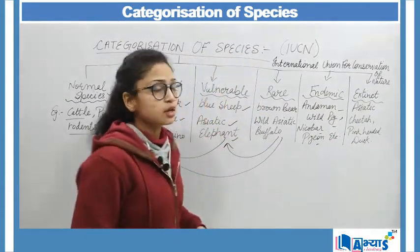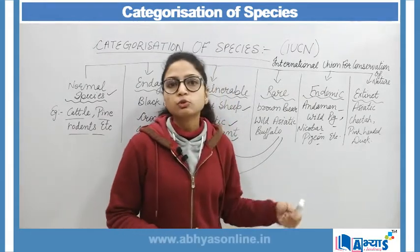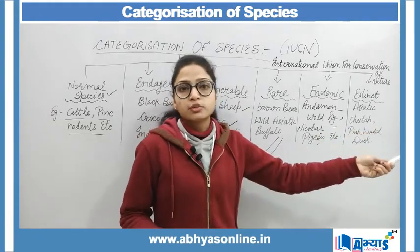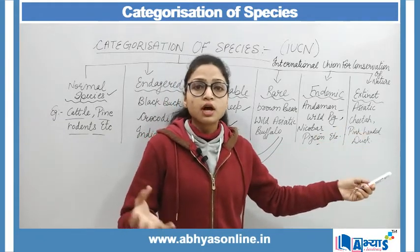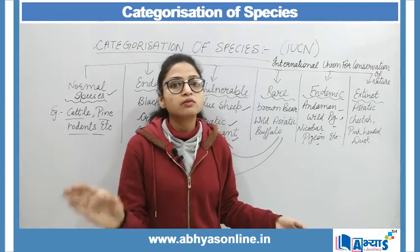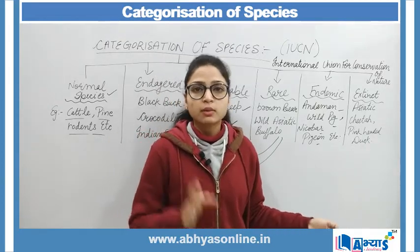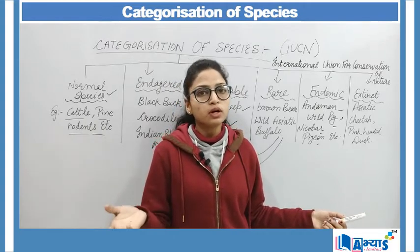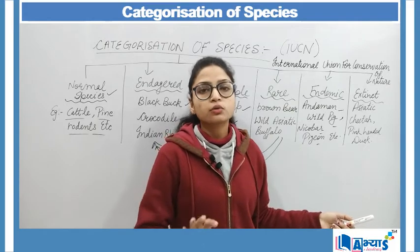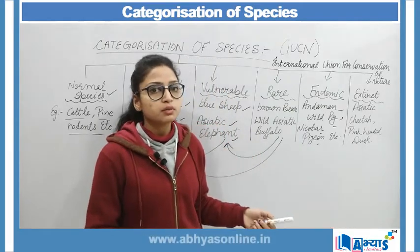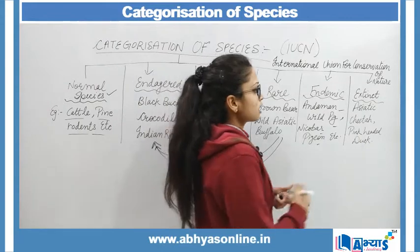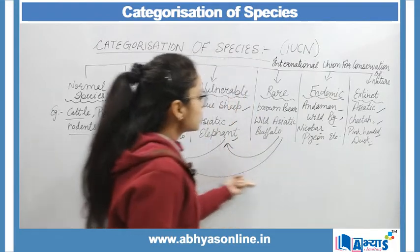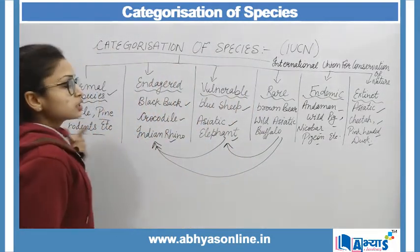Extinct का मतलब होता है लुप्त हो जाना या बिल्कुल खत्म हो जाना। जब इस category के animals का survey किया गया, जहाँ पर यह पाए जाते थे वहाँ जाकर survey किया गया, तो यह वहाँ पर नहीं मिले। इसका मतलब है कि इनकी species world में से overall खत्म हो चुकी हैं। इसके examples हैं Asiatic cheetah और pink-headed duck।